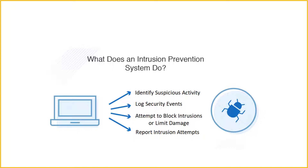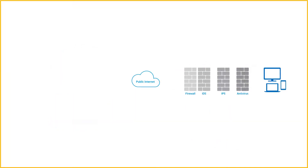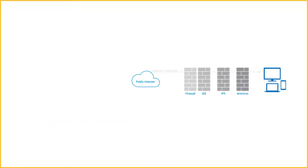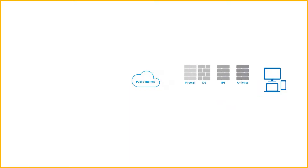As part of an enterprise security infrastructure, an IPS is a crucial way to help prevent some of the most serious and sophisticated attacks. Intrusion prevention systems work by scanning all network traffic, and there are a number of different threats that an IPS is designed to prevent.